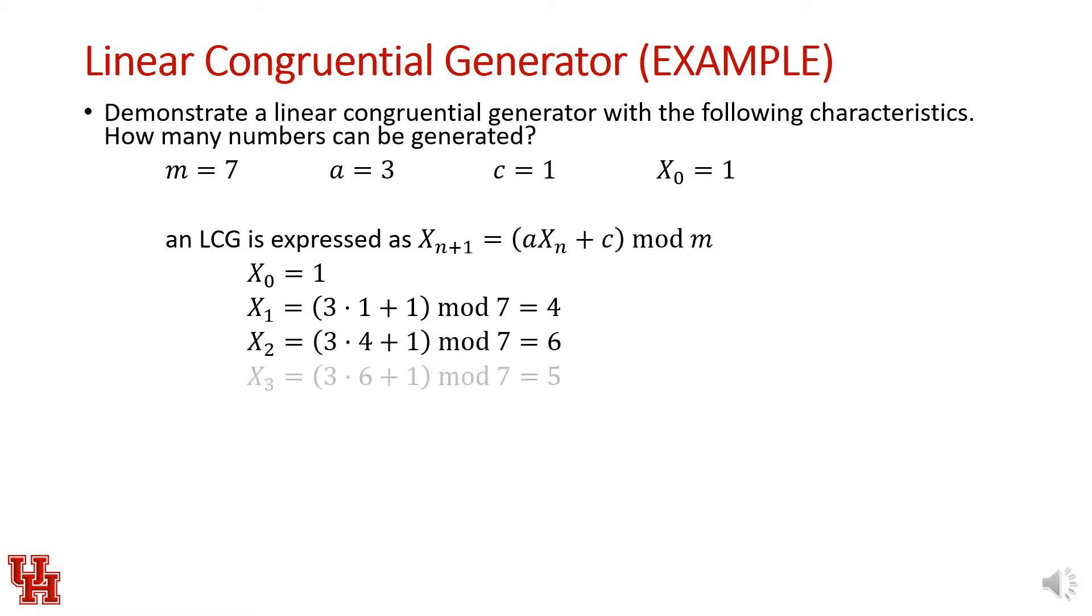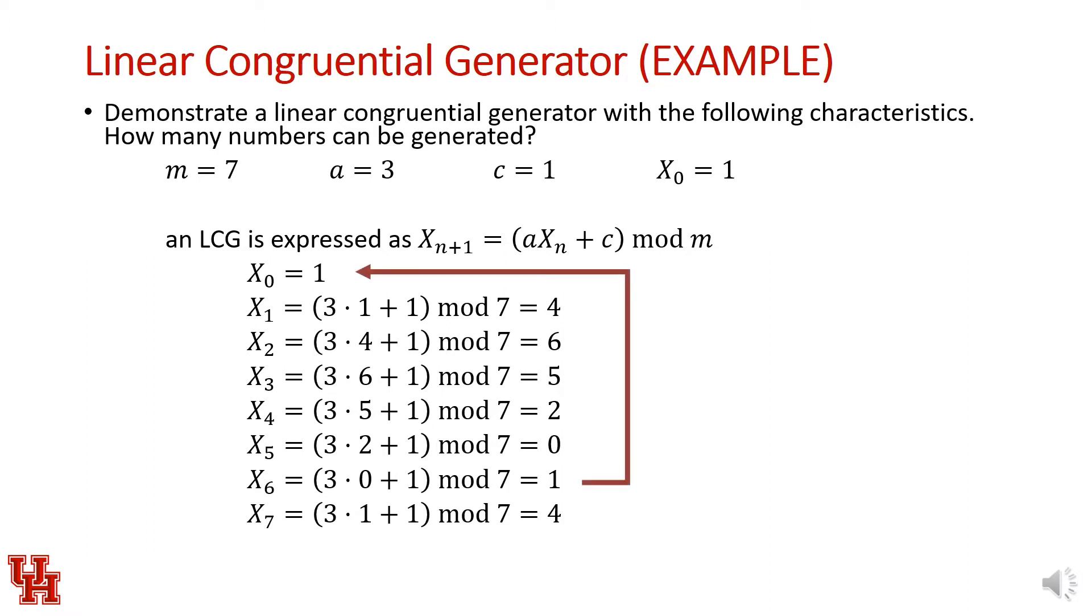The next value is 6, then 5, then 2, and 0, and then 1 again. Since the seed, the previous random number, is placed as a component in this expression, when we hit 1, which is our original seed, all that's going to happen is we're going to start looping over this sequence again. Once we hit the seed, we're going to generate this same sequence over and over.